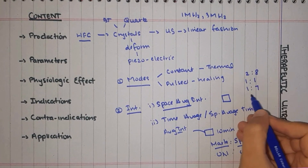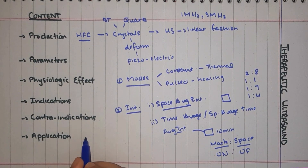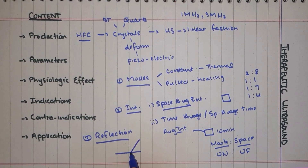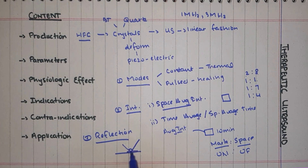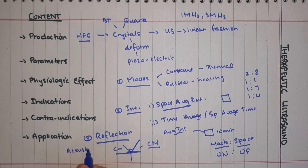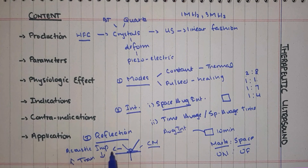The most commonly used mark-space ratios are 1:8, 1:1, 1:7, and 1:4, representing the on and off periods. The third parameter is reflection. When the ultrasonic beam reaches the skin surface, it will partially reflect back. To prevent this reflection and maximize beam penetration, we use a coupling medium, because sound waves cannot pass through air.